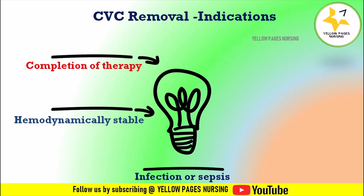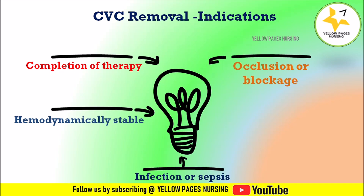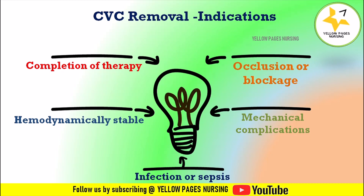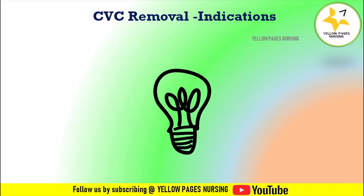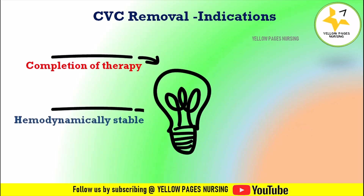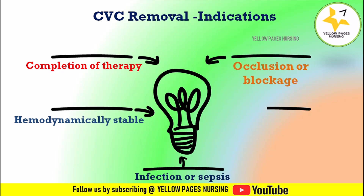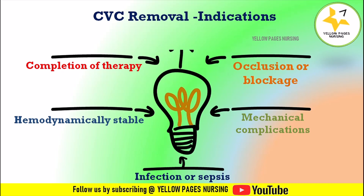The indications for central venous catheter removal include: completion of therapy — when the treatment course is completed, such as chemotherapy, IV antibiotic therapy, total parenteral nutrition, or when inotropes are no longer needed. Also, when the patient is hemodynamically stable and all vital parameters are normal before removing the catheter.